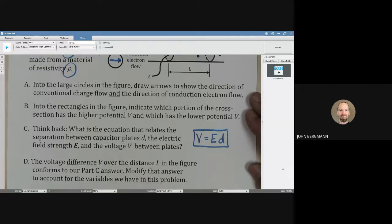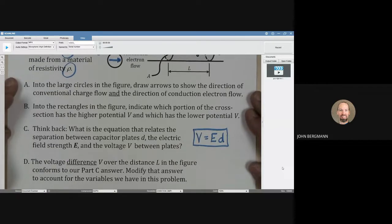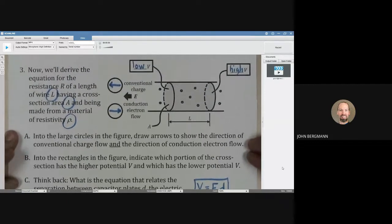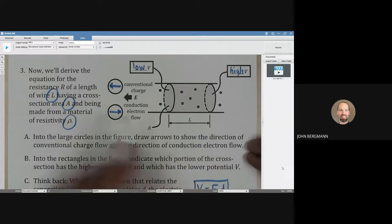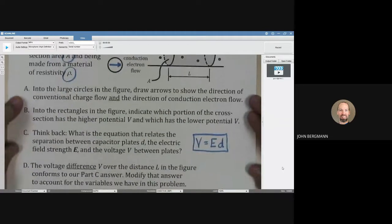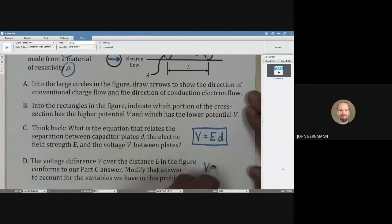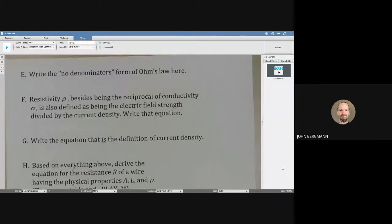The voltage difference V over the distance L that's in the figure conforms to this answer. So, let's modify that answer to account for the variables we have in this problem. We have V. We have E. But in the figure, it's not D that we're looking at. It's L. So, we're going to change this equation from V equals E times D to V equals E times L. Just for the moment. We're going to use that here in the next couple of minutes.